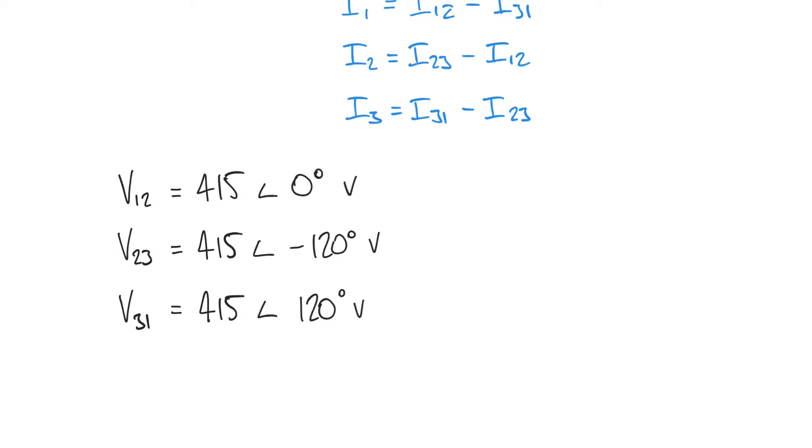Let's say that our three impedances Z12 is equal to 4 plus J2 ohms, Z23 is 3 minus J3 ohms, and Z31 is 5 plus J ohms or J1 ohms.